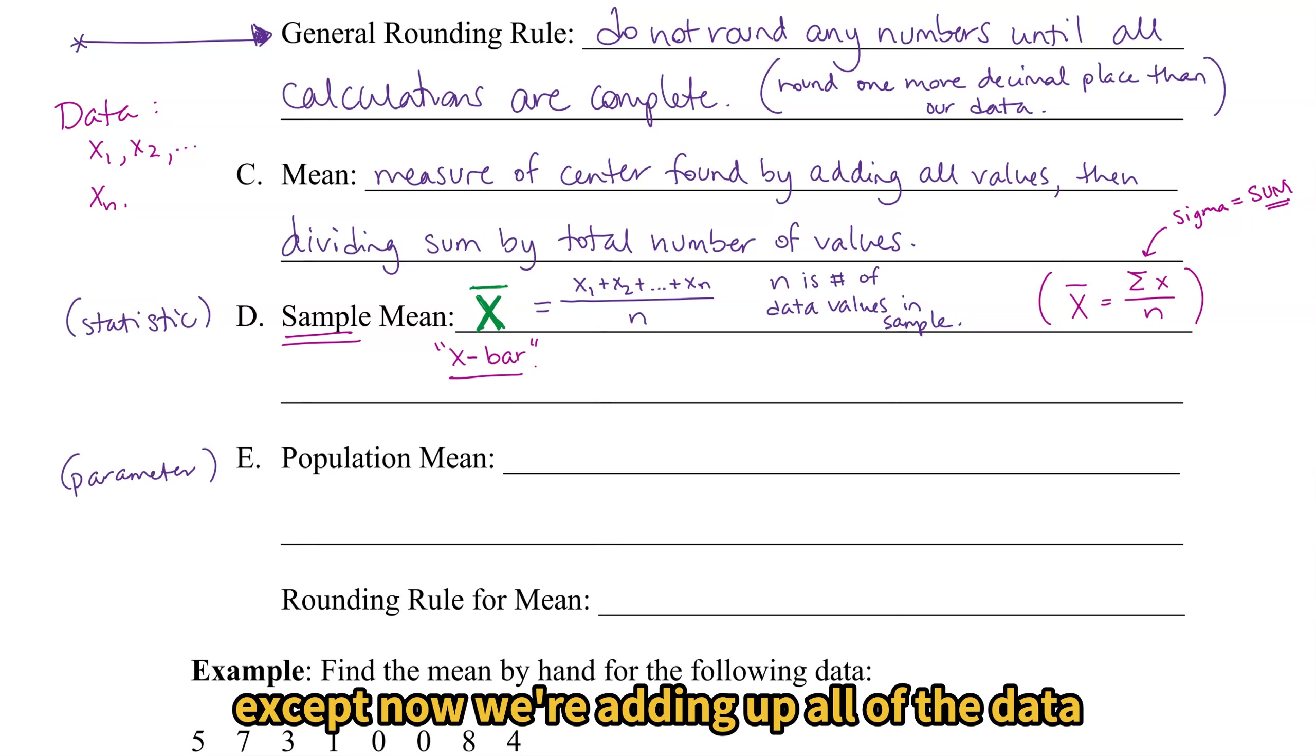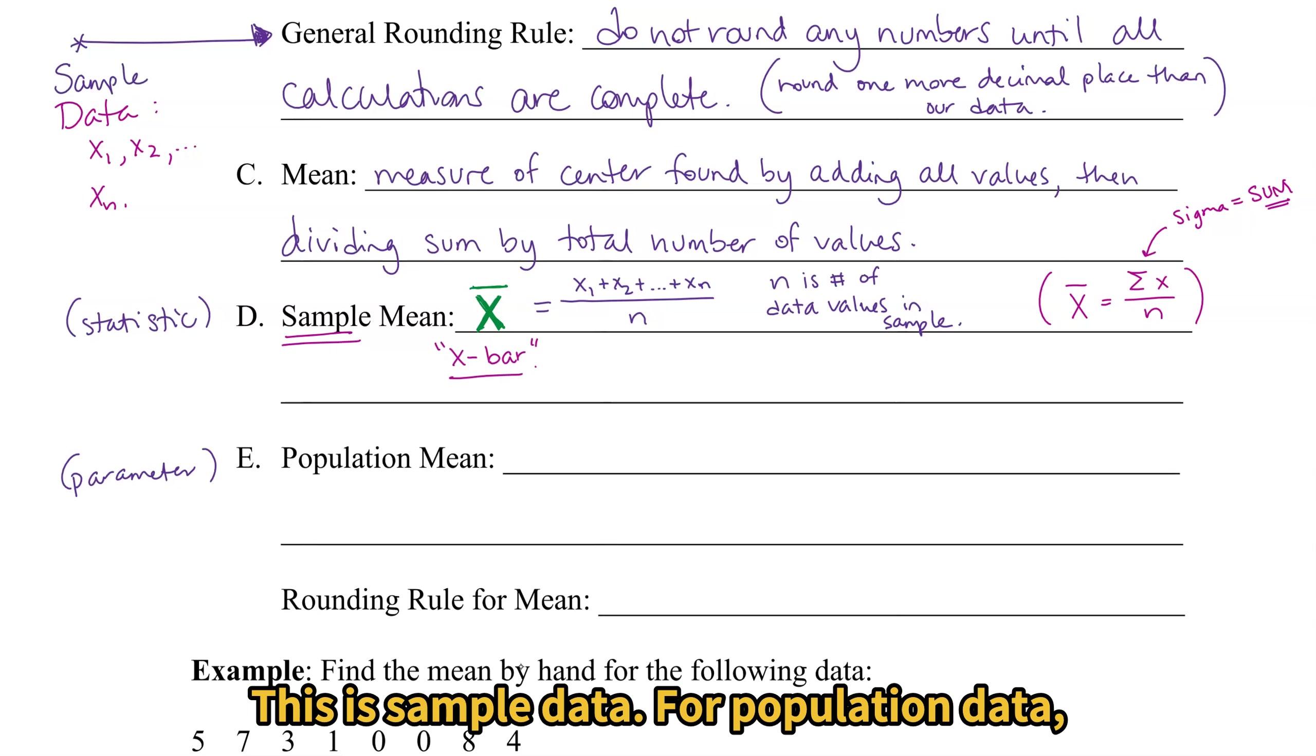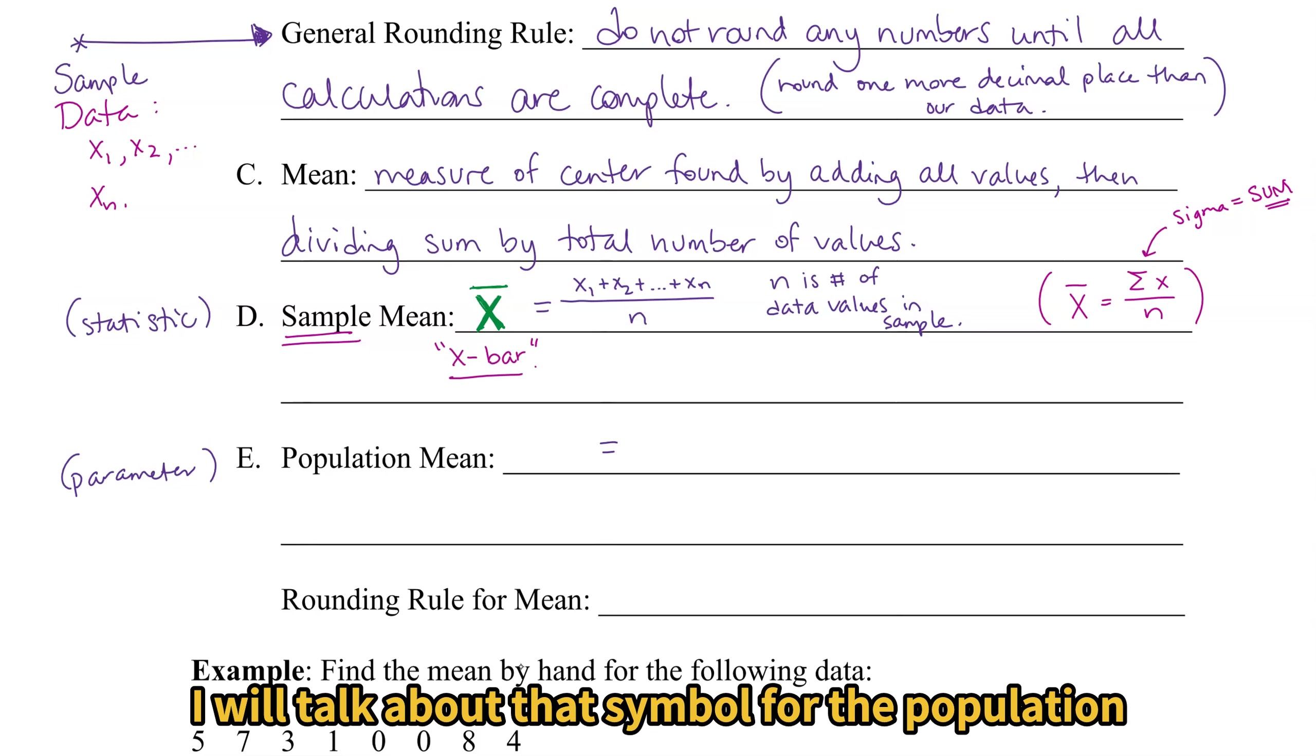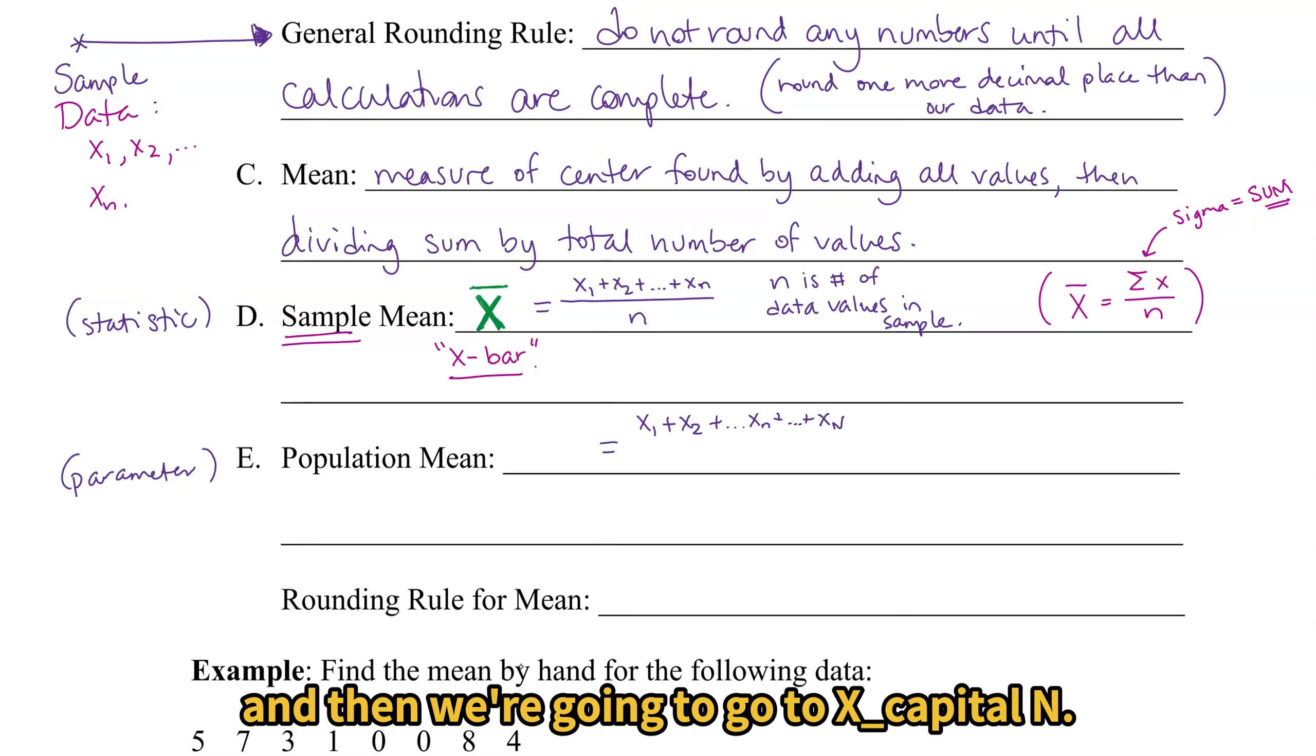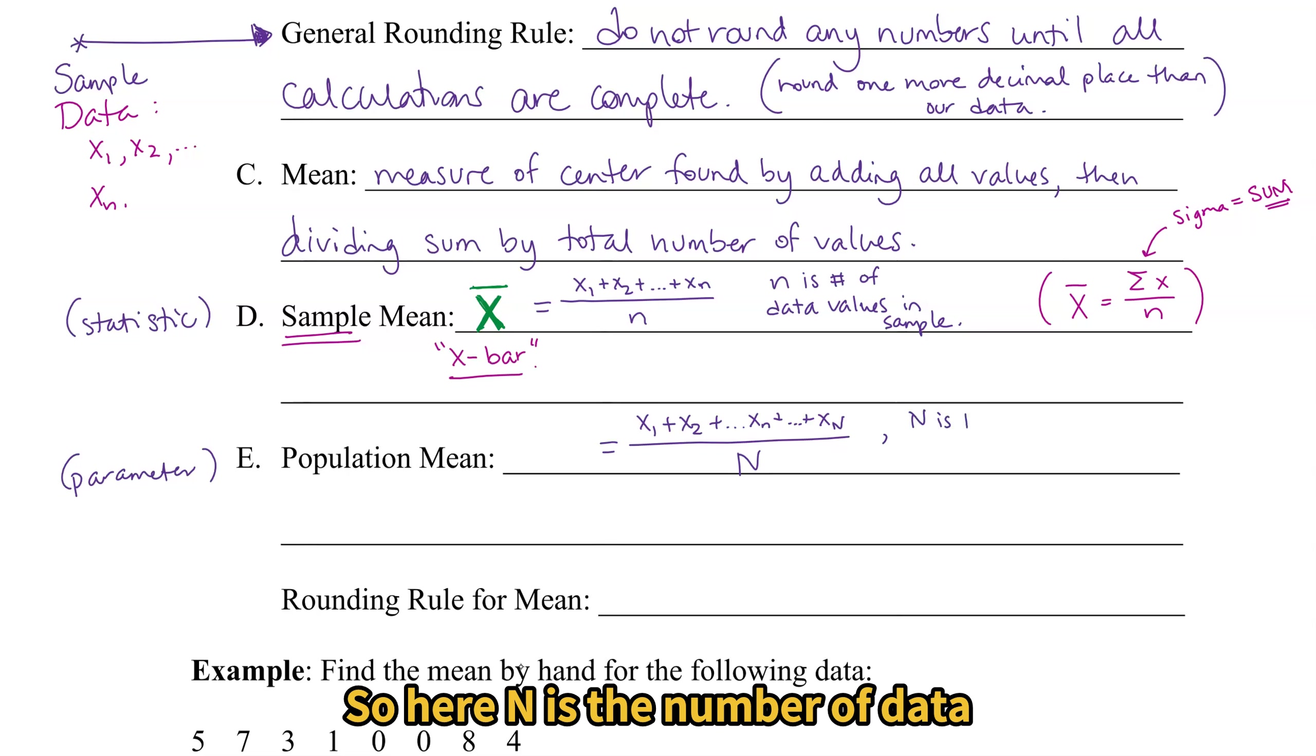The population mean has pretty much exactly the same formula, except now we're adding up all of the data values in the population. So let me clarify this data up here. This is sample data. For population data, we may go to some capital N. I will talk about that symbol for the population mean in just a second. So we'll have x1, x2, we may have x little n, and then we're going to go to x capital N. We're adding up all of the values in our population. So here, n is the number of data values in the population.